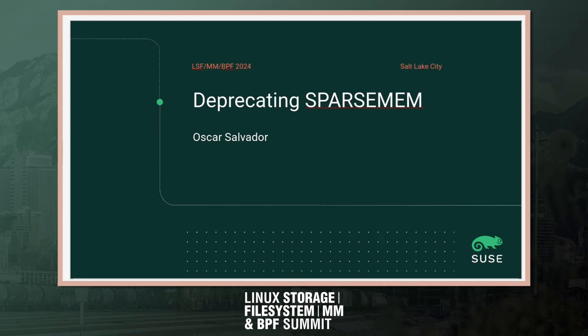That speed-up is not free. On environments that don't have VMEMMAP enabled and run on config SparseMem only, whenever you want to convert the page frame number to the page, you need to get the section number, and for that you have to check the page flags, then get the memap from the section and do some additional subtraction — so it gets fairly more complicated.